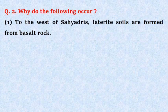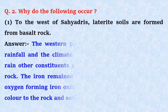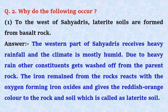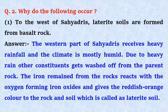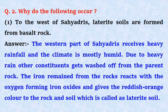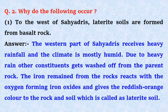Question number 2: Why do the following occur? First, to the west of Sayadris, laterite soils are formed from basalt rock. Answer: The western part of Sayadris receives heavy rainfall and the climate is mostly humid. Due to heavy rain, other constituents get washed off from the parent rock. The iron remaining from the rock reacts with oxygen, forming iron oxide, and gives the reddish orange color to the rock and soil, which is called laterite soil.